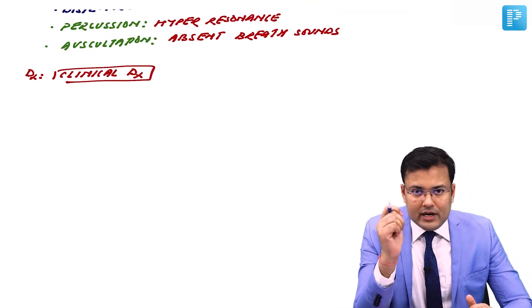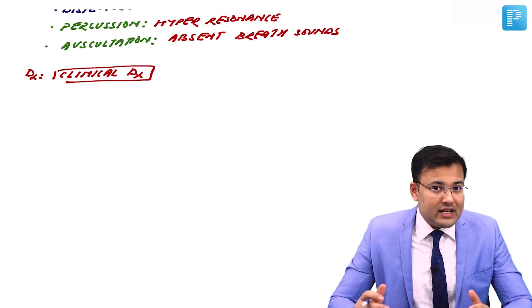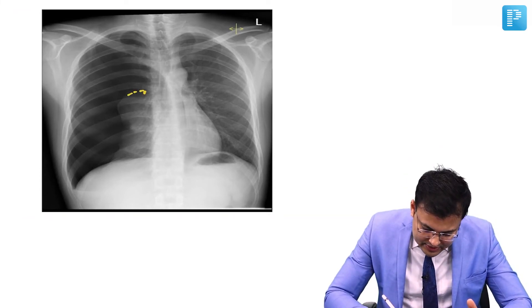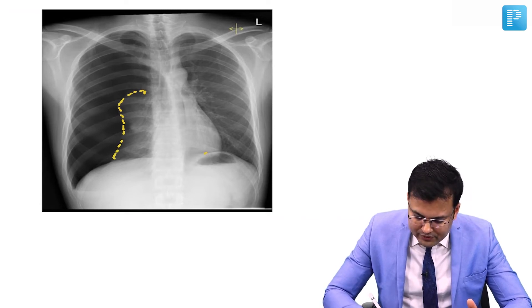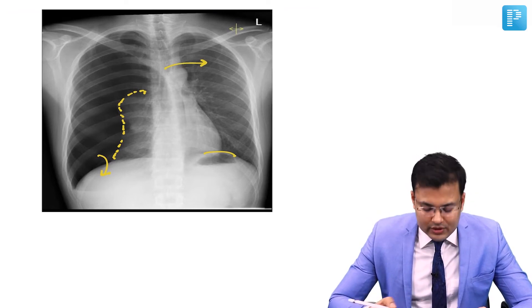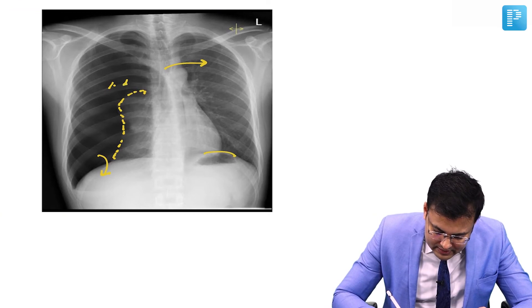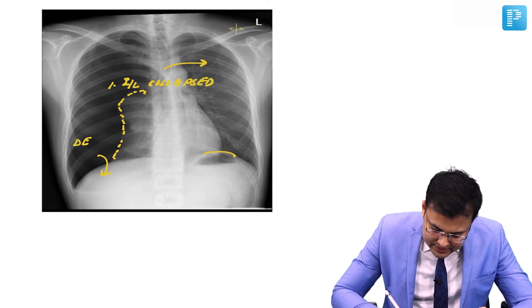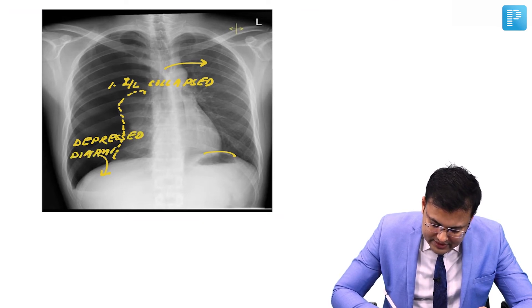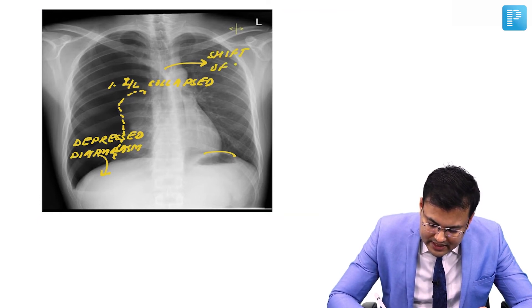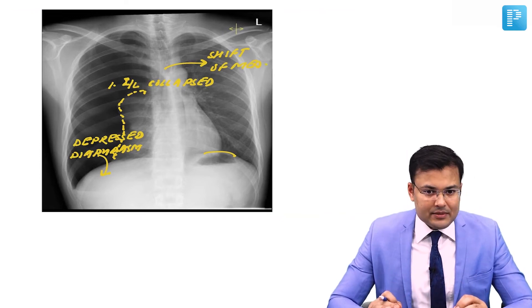If an X-ray is provided, the findings include: collapse of the ipsilateral lung, depressed diaphragm, and shift of the mediastinum to the opposite side. These are image-based findings frequently asked in exams, but remember the diagnosis is clinical.